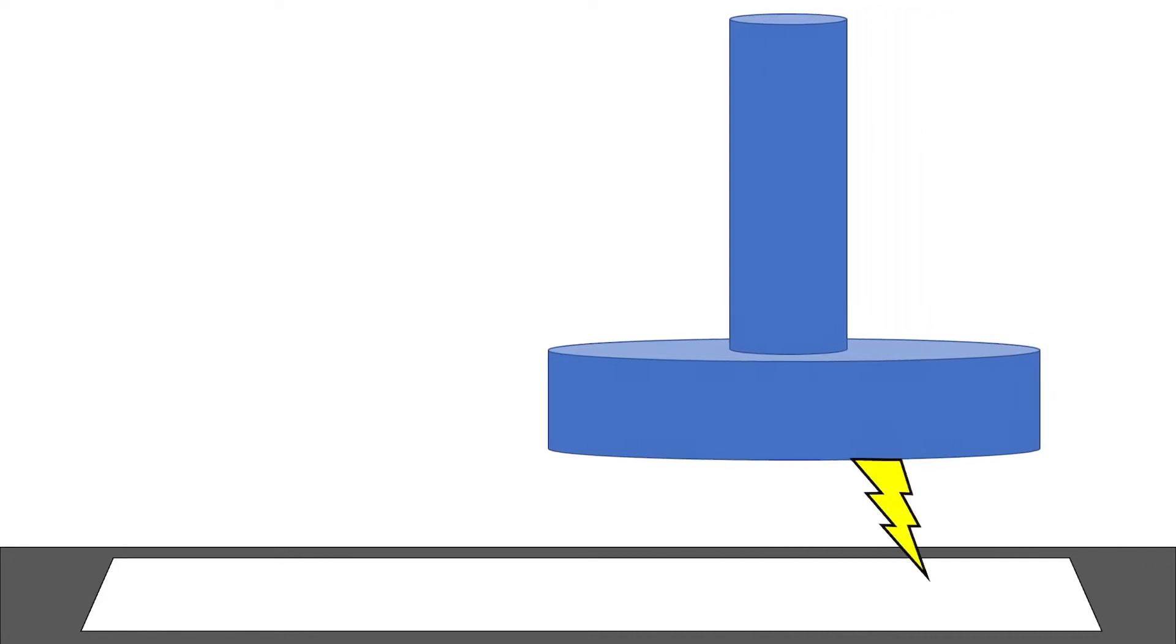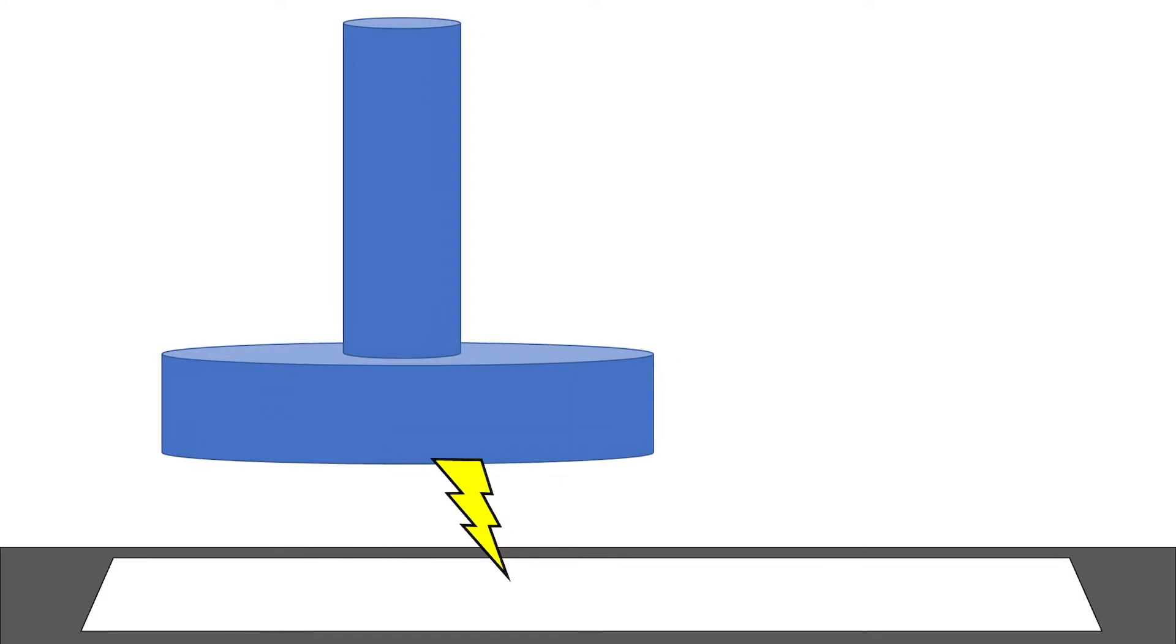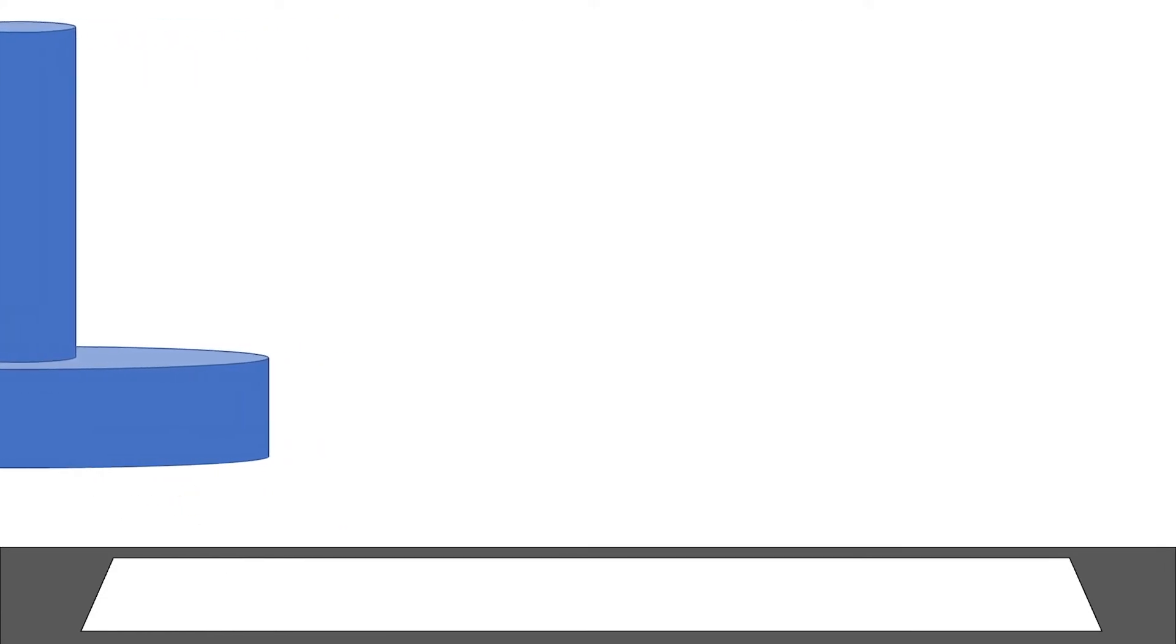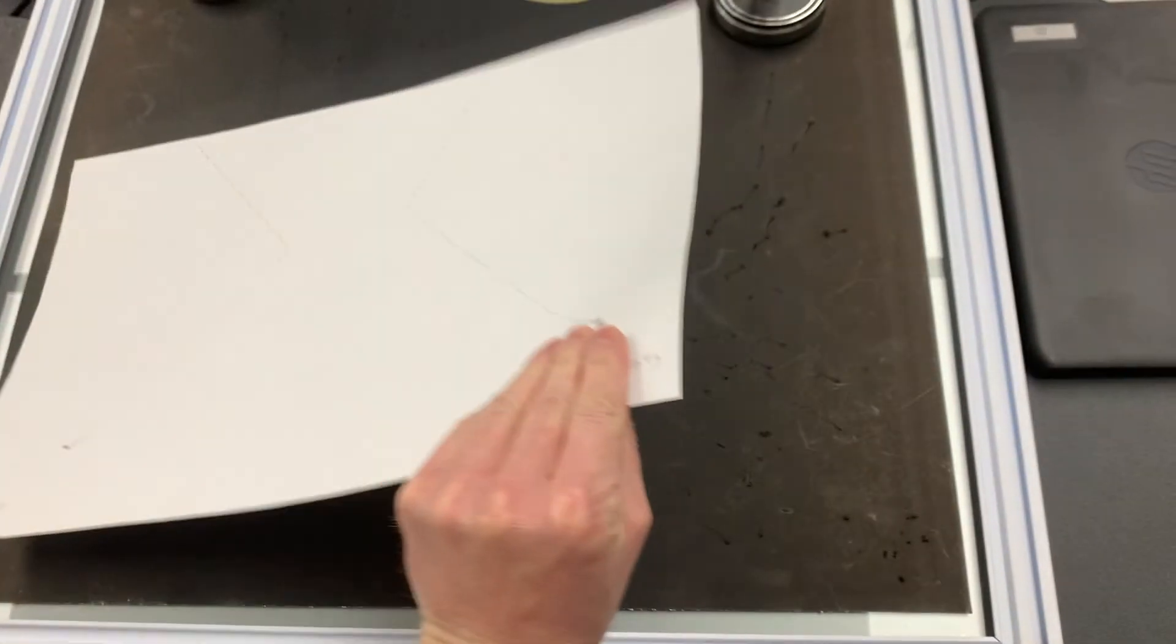This animation is a bit simple but it gets the idea across that as the puck moves it's going to be constantly setting these sparks down to the piece of paper below. And next we flip over that paper and on the underside we can see the marks that the sparks made on the paper as the puck moved.